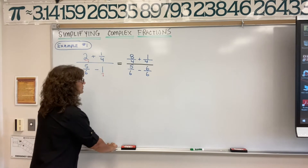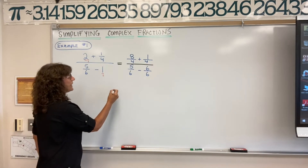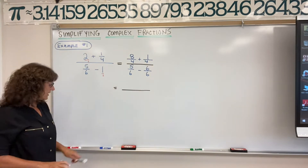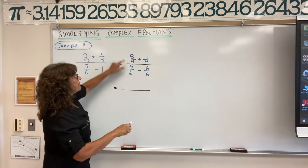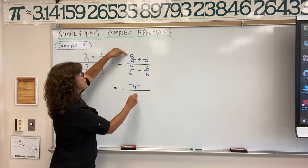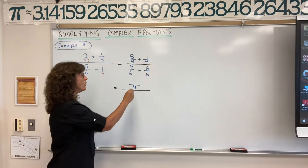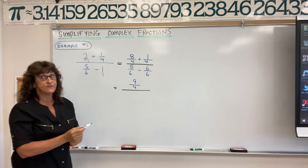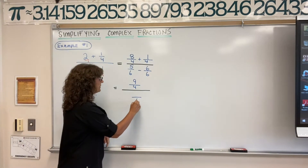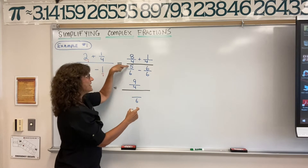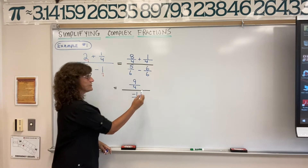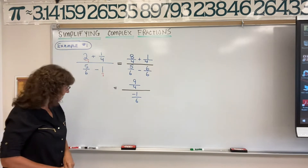Now we can combine the fractions in the numerator and combine the fractions in the denominator. Starting with the numerator: keep the denominator, combine the numerators — eight plus one — and you get nine. There's your fraction for the numerator. How about the denominator? Keep your denominator six, combine five minus six — that would be a negative one.